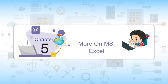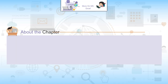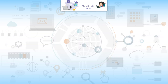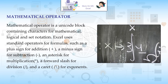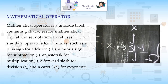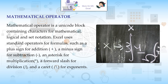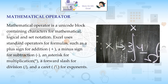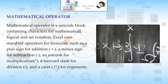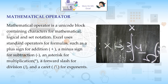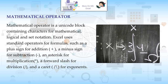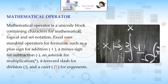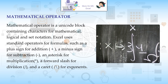Chapter 5: More on MS Excel covers Mathematical Operators, Cell References, and Functions. A Mathematical Operator is a unicode block containing characters for mathematical, logical, and set notation. Excel uses standard operators for formulas such as a plus sign for addition, a minus sign for subtraction, an asterisk for multiplication, a forward slash for division, and a caret for exponents.